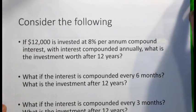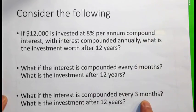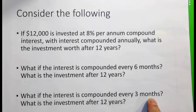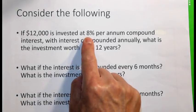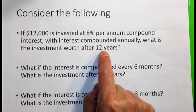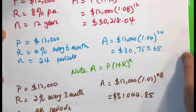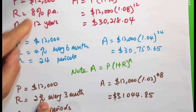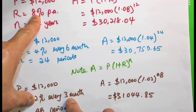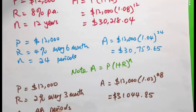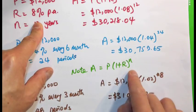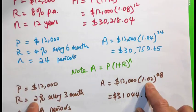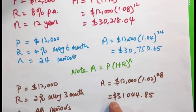Scenario 3: The interest is compounded every 3 months. What is the investment after 12 years? There are 4 three-monthly periods in a year, so we divide the 8% by 4 and multiply the 12-year period by 4. R is 2% every 3 months (8% per annum divided by 4), and n is 12 times 4, which is 48 three-monthly periods. Using the same formula with r = 2% and n = 48, the result is $31,044.85.